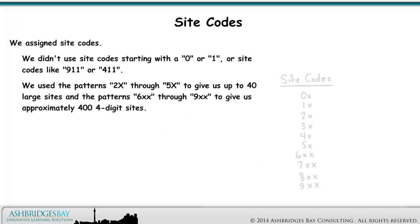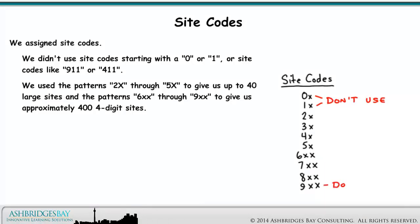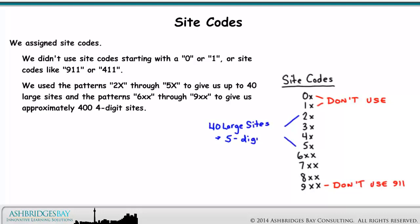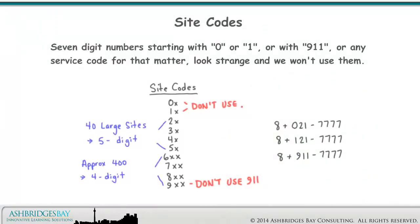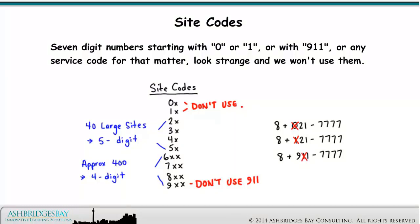We assigned site codes. We didn't use site codes starting with a 0 or 1, or site codes like 9-1-1 or 4-1-1. We used the patterns 2x through 5x to give us up to 40 large sites, and the patterns 6xx through 9xx to give us approximately 400 four-digit sites. Seven-digit numbers starting with 0 or 1, or with 9-1-1 or any service code, look strange and we won't use them.